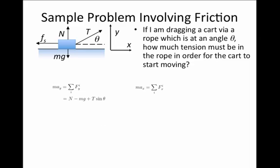If we work first in the Y direction, there are three forces. There's the normal force pointing up in the positive Y direction, gravity pointing down in the negative Y direction, and there is a component of our tension, T sine theta, in the positive Y direction. We know the object does not move vertically, so the acceleration in the Y direction will be zero.